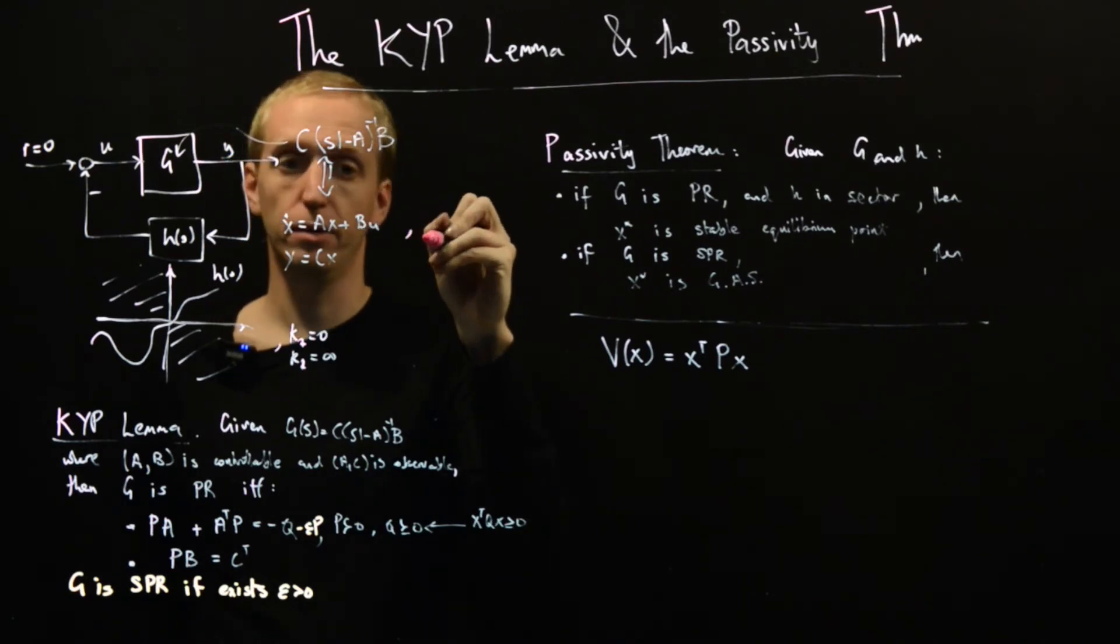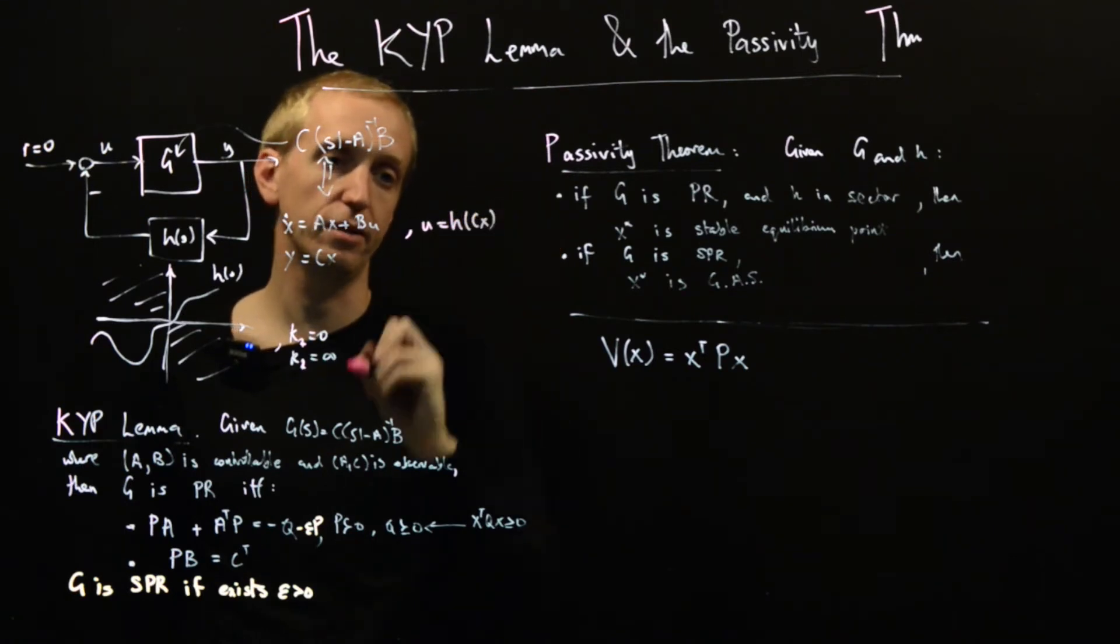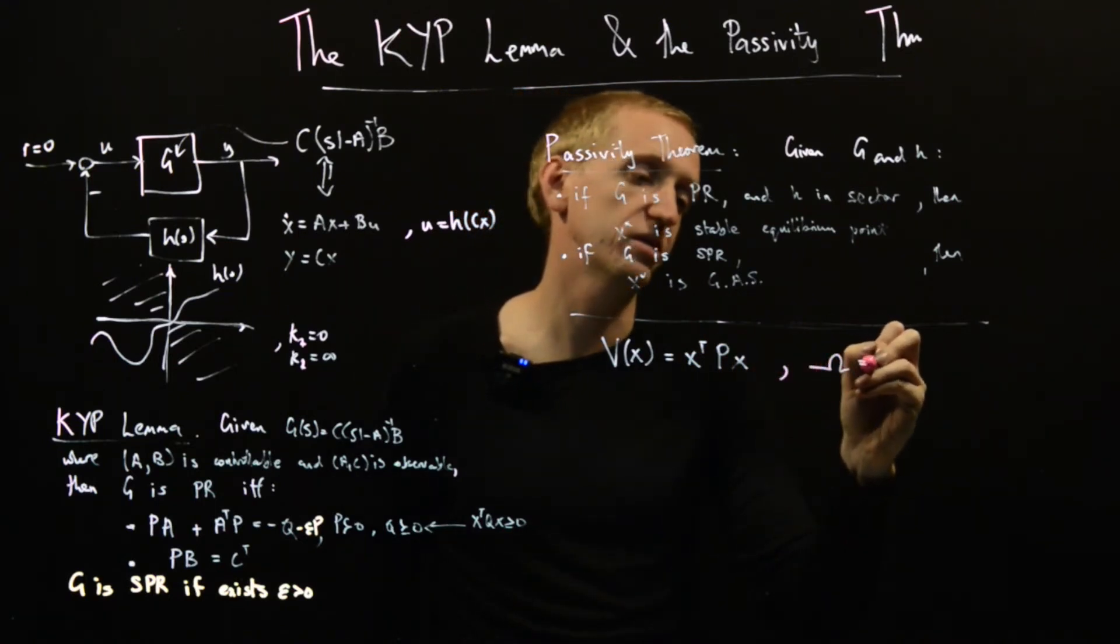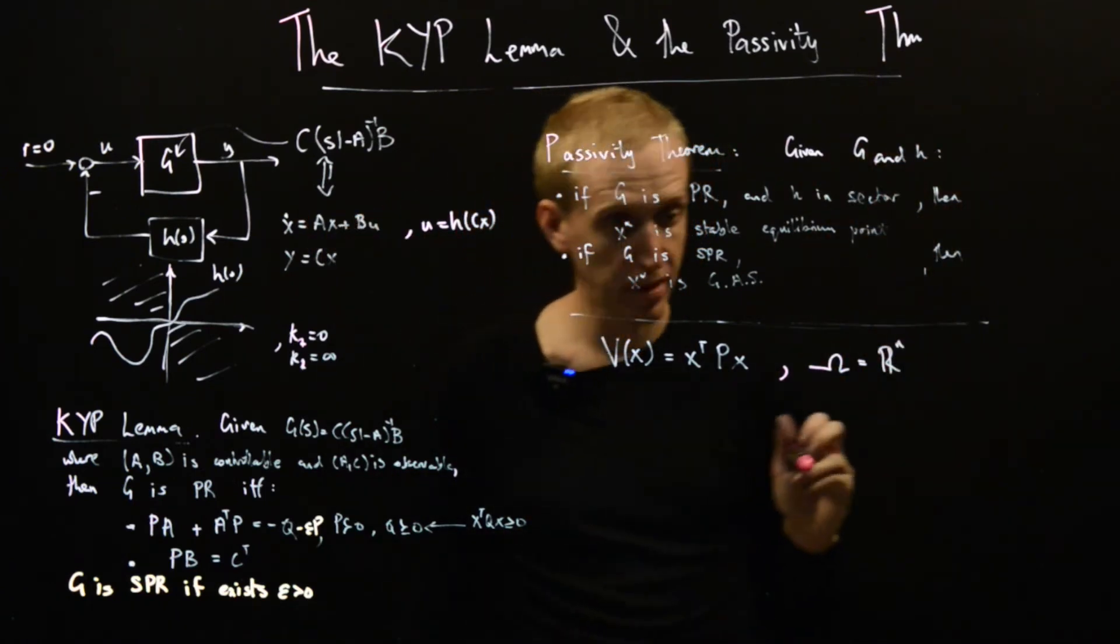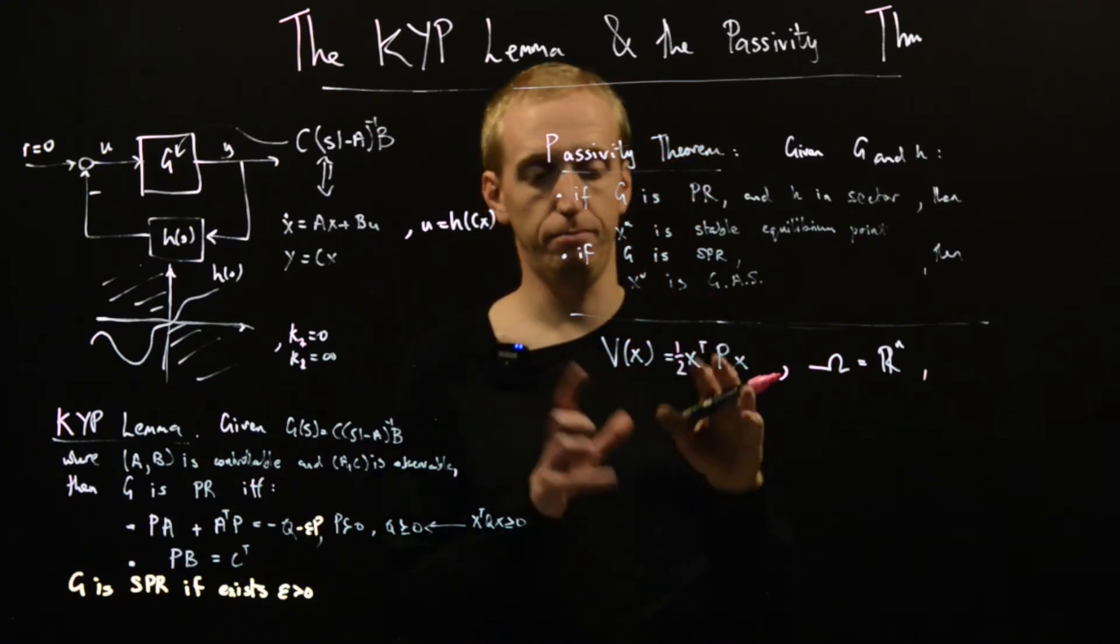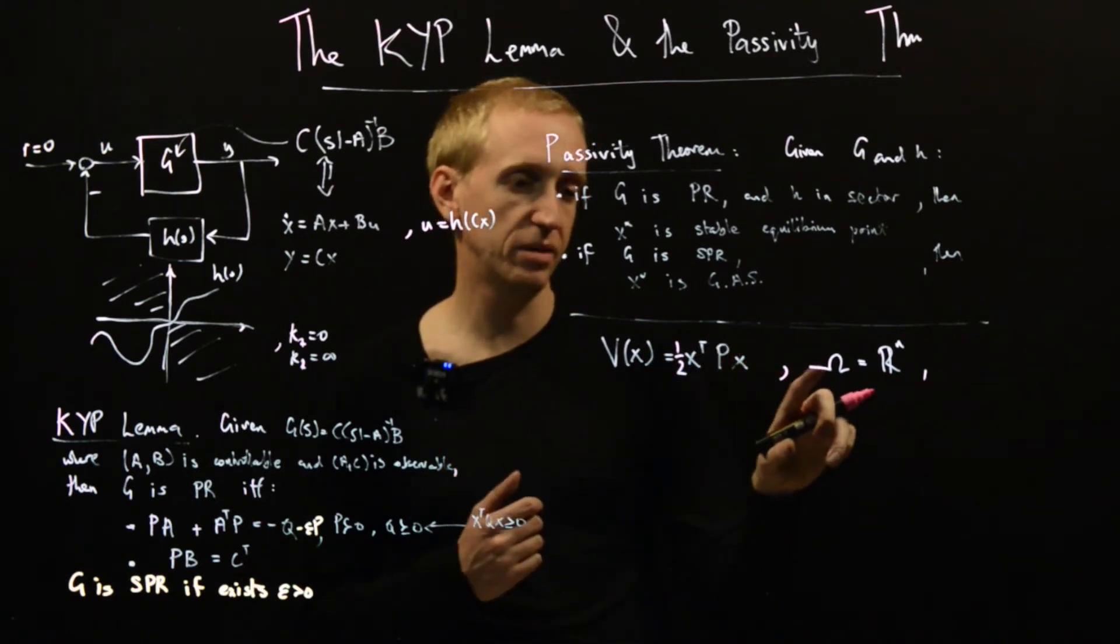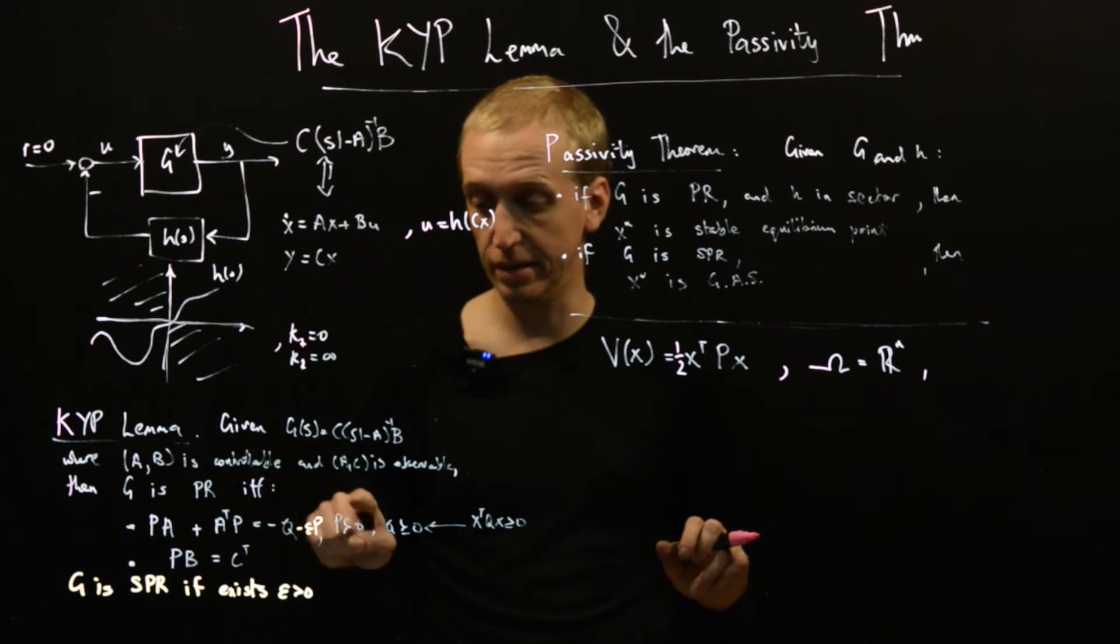We're going to prove the passivity theorem by using the Lyapunov function. We're going for global results, so we're going to set our region omega to be the entire space. We need to satisfy our Lyapunov checklist. We need V of our equilibrium point to be equal to zero. This is the case because our equilibrium point is at the origin.